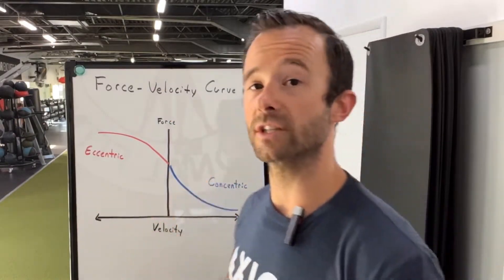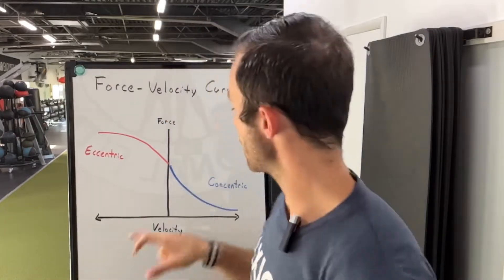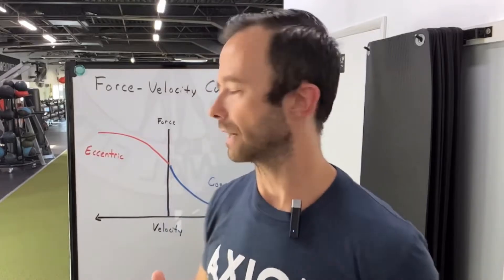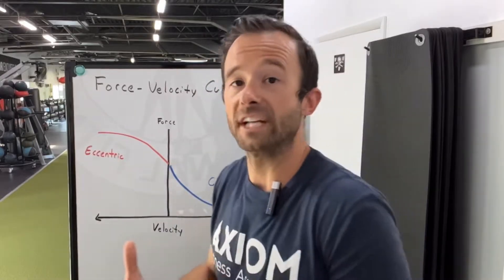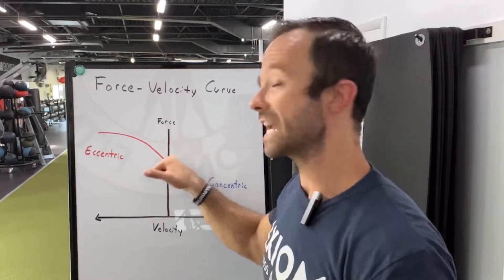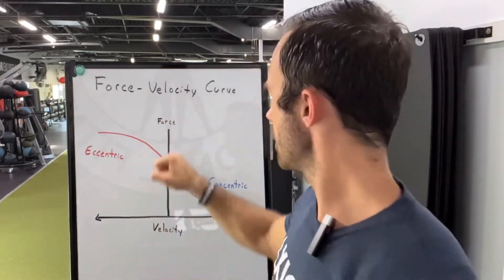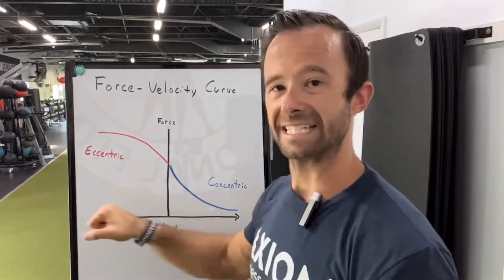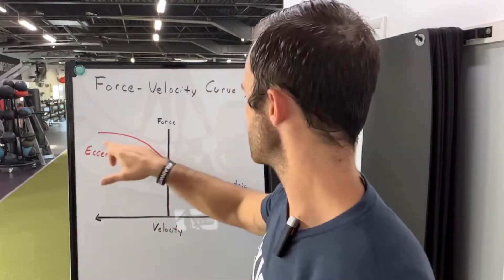The easiest one to really understand to begin with is isometric contractions. With an isometric contraction, we're generating force but there's no change in the angle of the joint. So if I'm holding a dumbbell at a 90-degree angle for my biceps, I have an isometric contraction — I'm generating a certain amount of force and I have that capacity, but there's no velocity happening. That would be where the eccentric and concentric lines cross over on the curve.